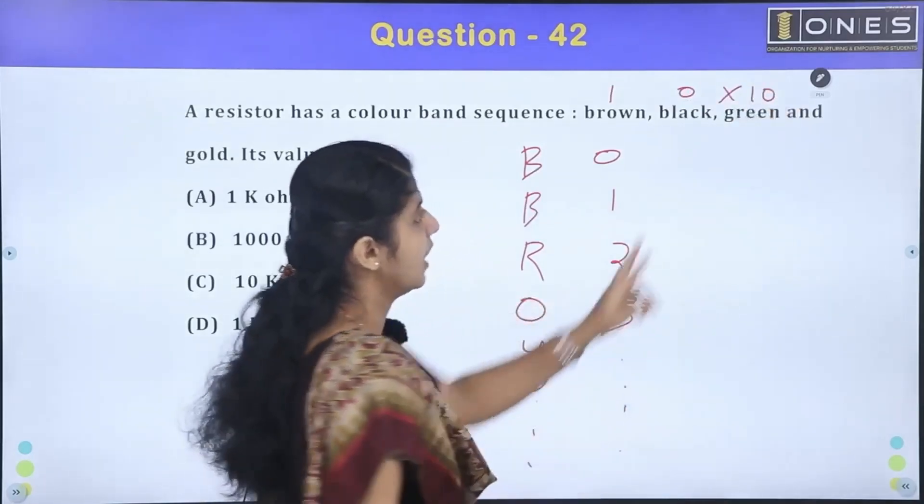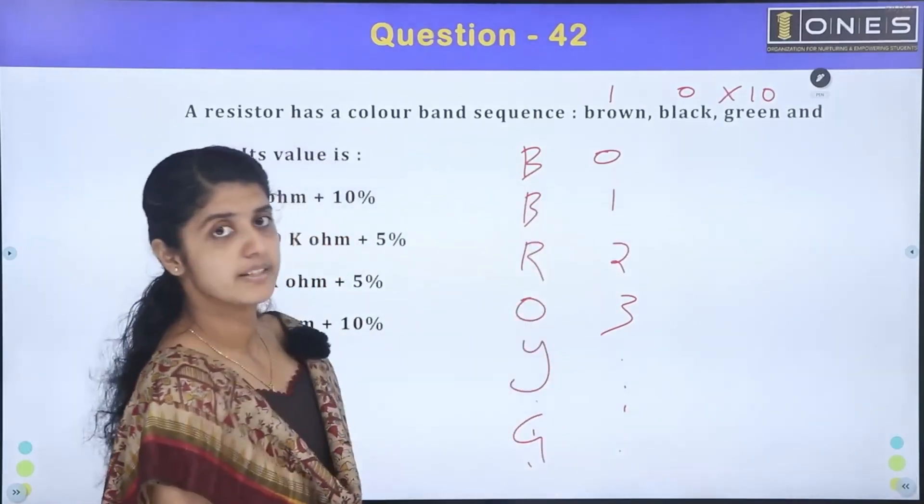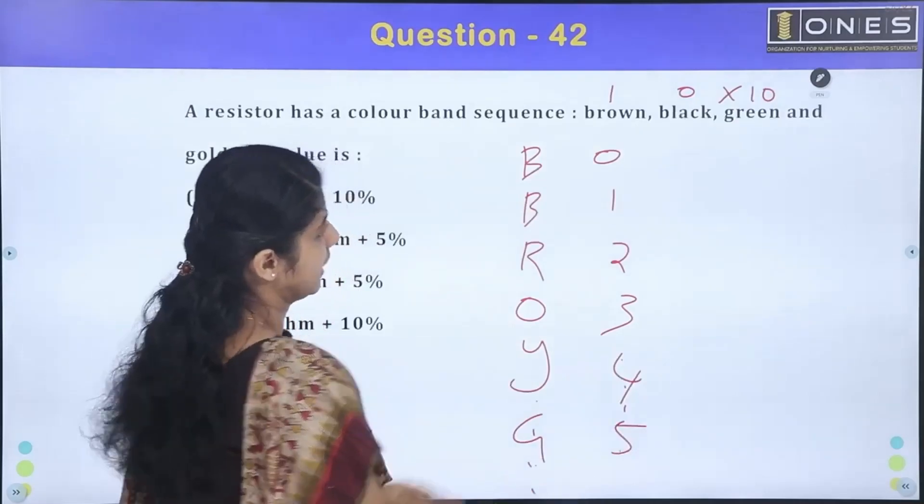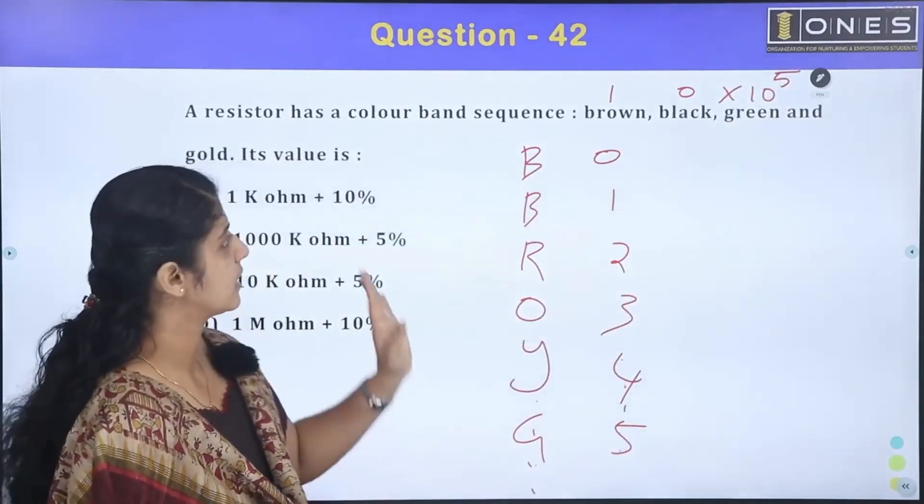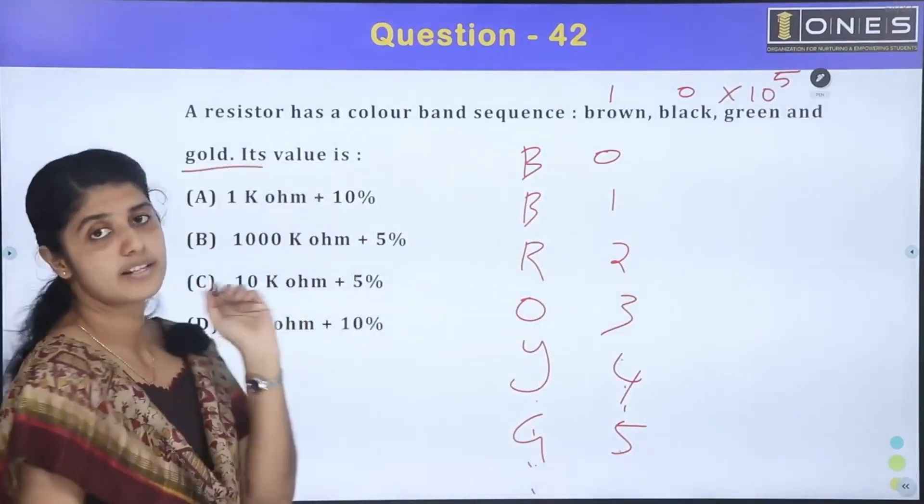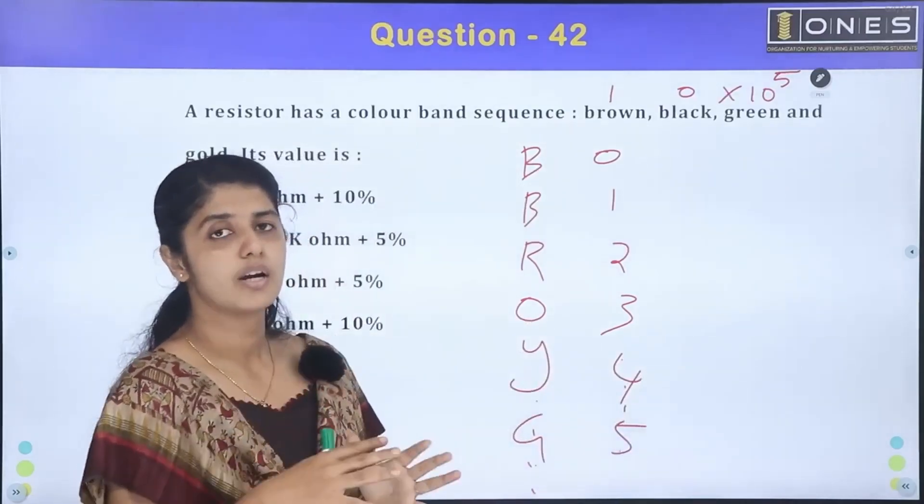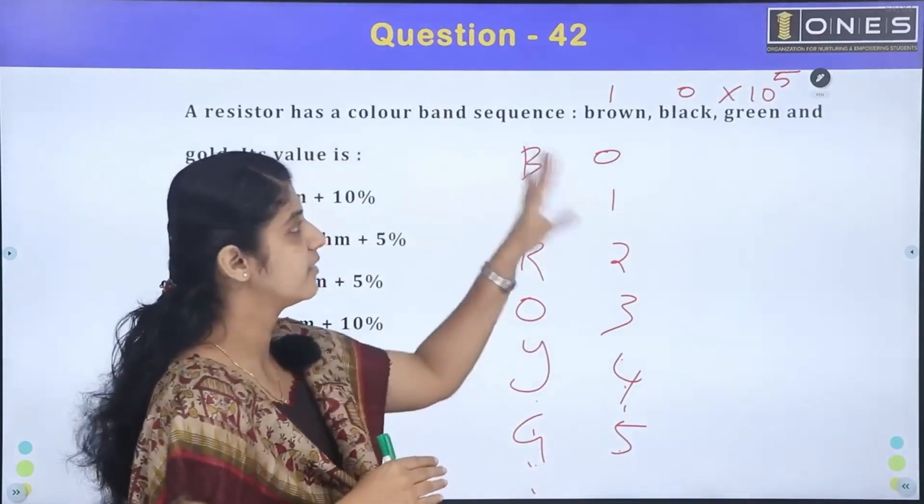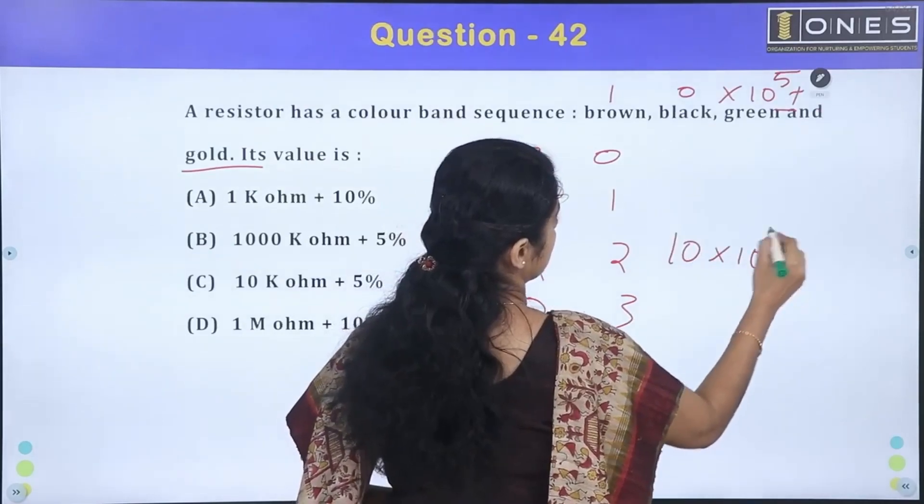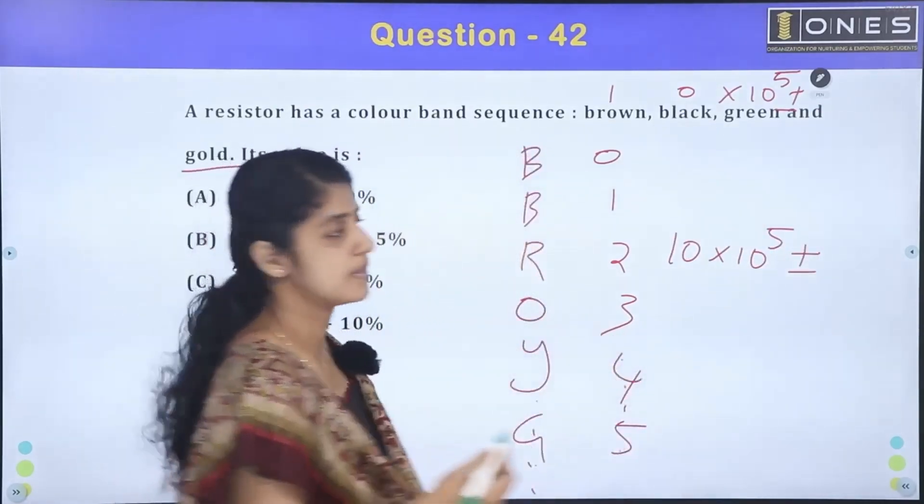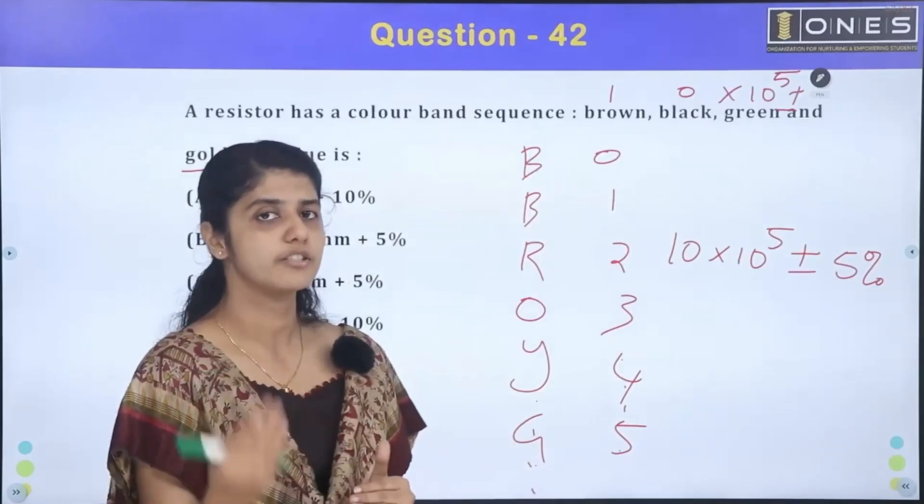First letter is 1, second is 0. Then 10. Then one value is 10 power, that value is green. If you want to make the list complete, you can see 4, then green - green is 5. If you go here, 10 raise to power, green is 5. Then gold is the next color band. Gold corresponds to tolerance value. Gold is 5%, silver is 10%, no color is 20%.